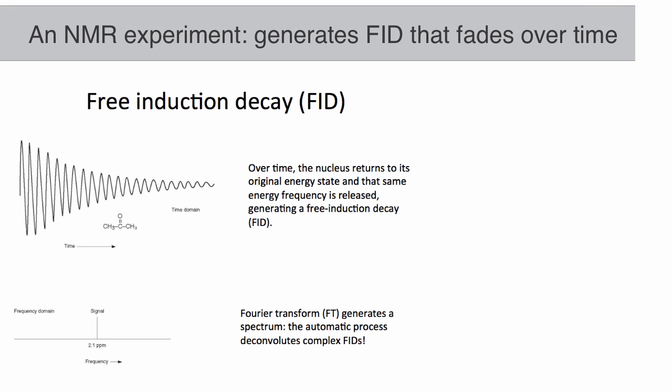That resonance frequency is translated into a value of chemical shift. To do that, the resonance frequency of a reference sample, tetramethylsilane, called TMS, is subtracted from the resonance frequency of the proton in question.